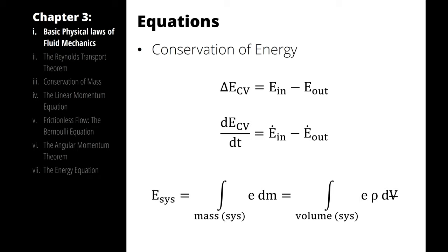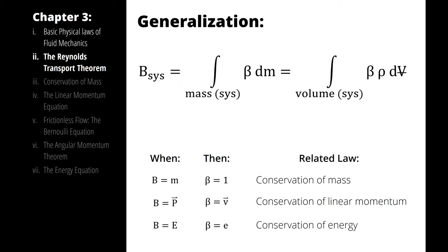The reason I have written all three like this is because I can make a generalization. I can write that in terms of an extensive property B and its accompanying intensive property β — I will refer to these henceforth as B and β, respectively. So when I plug in a β value of 1 and a B value of m, what I'm writing is the conservation of mass. When I plug in a β value of velocity and a B value of momentum, what I'm writing is the conservation of linear momentum. When I plug in a β value of specific energy and a B value of total energy, what I'm writing is the conservation of energy.